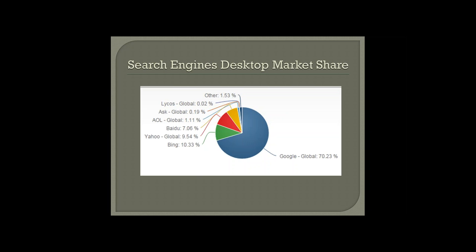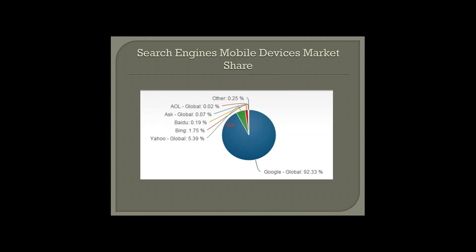Desktop market share: Google commands a lot. More importantly, moving forward as search changes — for mobile devices market share, Google has a whopping 92%. Whether it's an Android or tablet, Google is literally dominating the mobile search market.